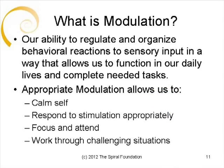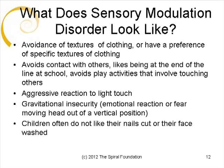Sensory modulation is our ability to regulate and organize behavioral reactions to sensory input in a way that allows us to function in our daily lives and complete needed tasks. Sensory modulation allows us to calm ourselves, respond to sensory stimulation appropriately, focus and attend to tasks, and work through challenging situations. Children who have difficulty with sensory modulation may avoid textures of clothing or have a preference for specific textures of clothing such as soft materials. They may avoid contact with others, preferring to be at the end of the line at school or avoid playing activities that involve touching others. They may have aggressive reactions to light touch or show signs of gravitational insecurity, which is an emotional reaction or fear of moving their head out of a vertical position. Also, children often do not like their nails cut or their face washed.